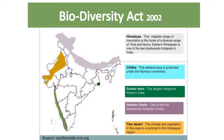The Himalayas are a majestic range of mountains and the home of a diverse range of flora and fauna. Eastern Himalayas is one of the two biodiversity hotspots in India. Overall, there are four main biodiversity hotspots in India. Chilka is a wetland area protected under the Ramsar Convention. Sundarbans is the largest mangrove forest in India. The Western Ghats is one of the two biodiversity hotspots. The Thar Desert has a climate and vegetation that is a contrast to the Himalayan range.